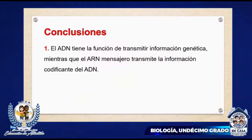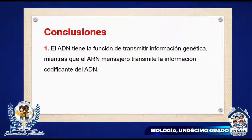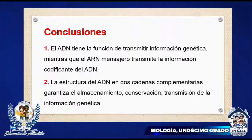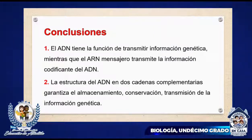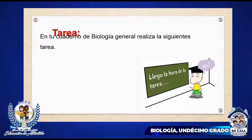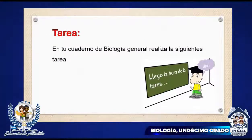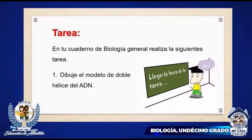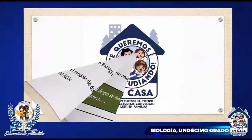Conclusiones. El ADN tiene la función de transmitir información genética, mientras que el ARN mensajero transmite la información codificante del ADN. La estructura del ADN en dos cadenas complementarias garantiza el almacenamiento, conservación y transmisión de la información genética. Y ya para terminar, tenemos una tarea: en tu cuaderno de biología general, dibuja el modelo de doble hélice del ADN. Muchas gracias.